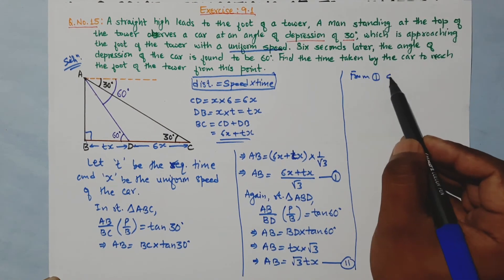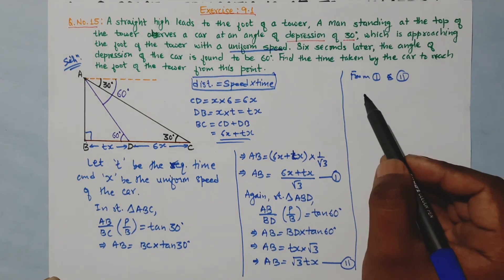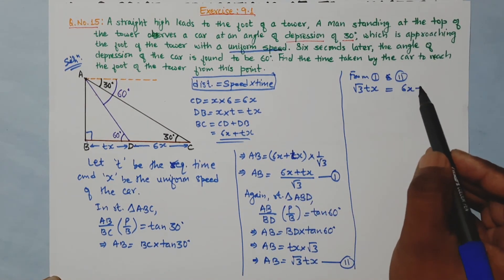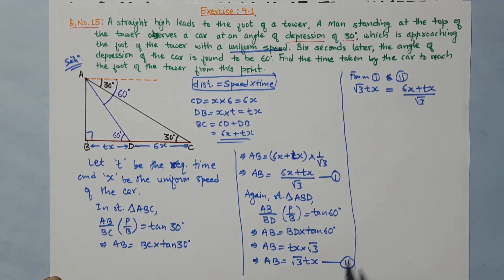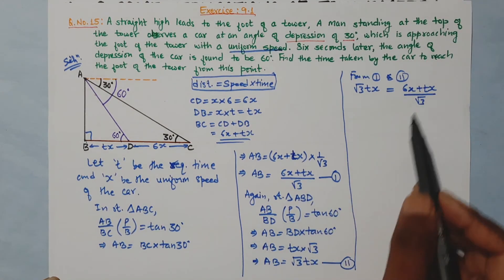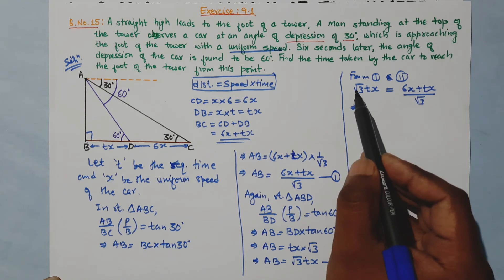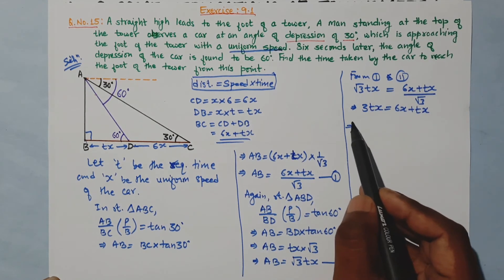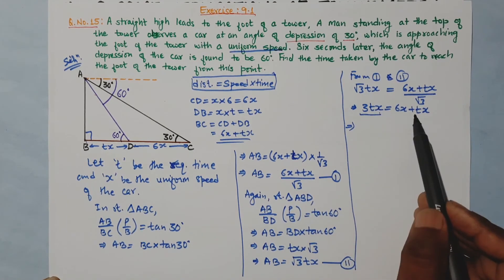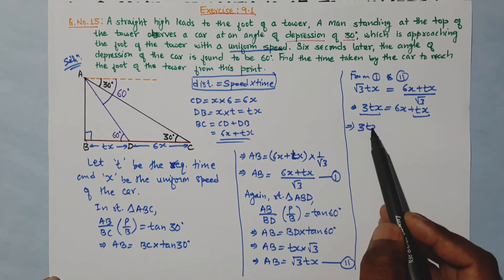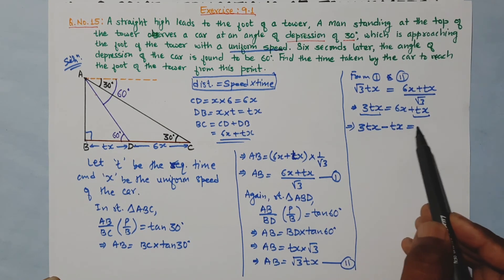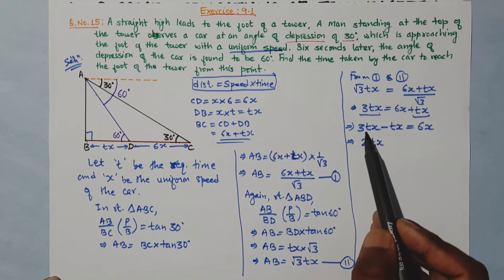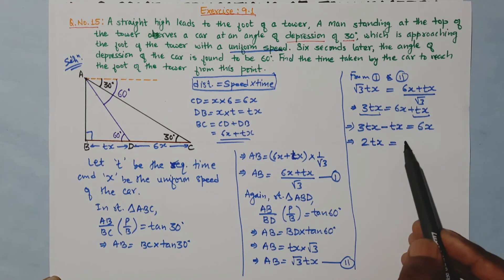From equations 1 and 2, root 3 Tx equals 6x plus Tx divided by root 3. Multiplying both sides by root 3: root 3 into root 3 Tx equals 6x plus Tx. So 3Tx equals 6x plus Tx. Therefore 3Tx minus Tx equals 6x, which gives 2Tx equals 6x.